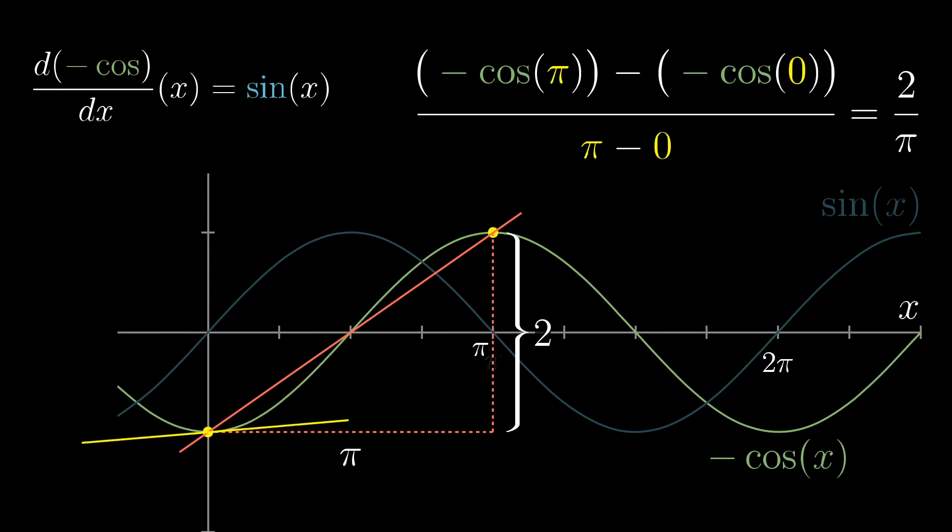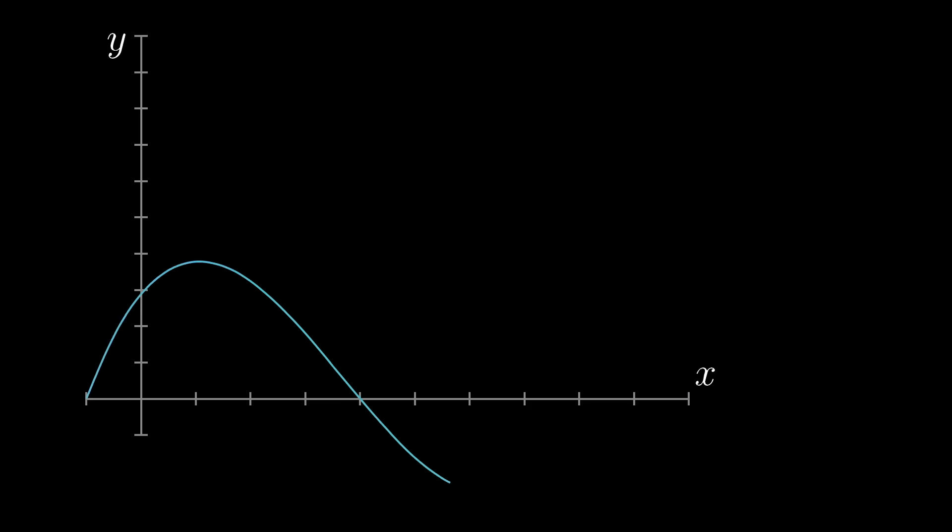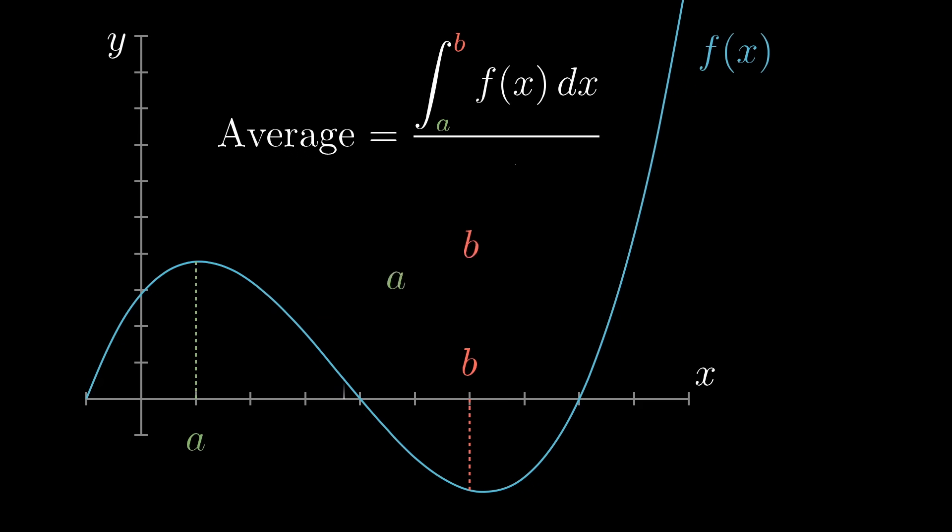To digest this idea, it helps to think about what it looks like for a general function. For any function f, if you want to find its average value on some interval, say between a and b, what you do is take the integral of f on that interval, divided by the width of that interval, b minus a.